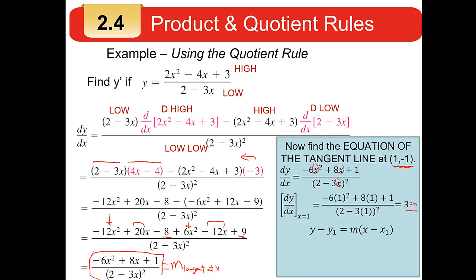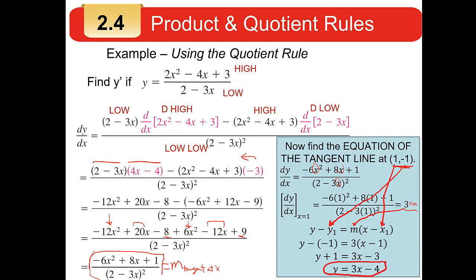With a slope of 3 and the point (1, -1), use the point-slope form: y minus y1 equals m times (x minus x1). Here x1 is 1, y1 is minus 1, and m is 3. Plug those in: minus and minus is plus, and multiplying 3 by (x minus 1) gives 3x minus 3. Subtract 1 from both sides to get the equation of the tangent line. Finding the slope is the calculus part; the rest is just algebra from algebra 1 and 2.